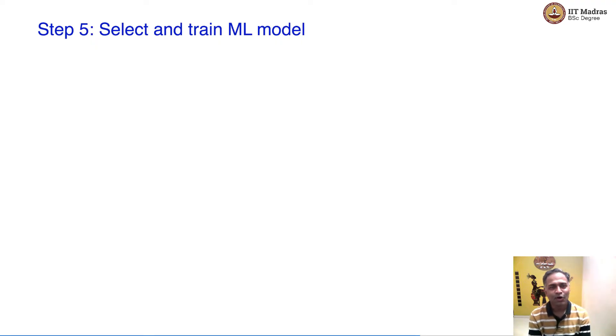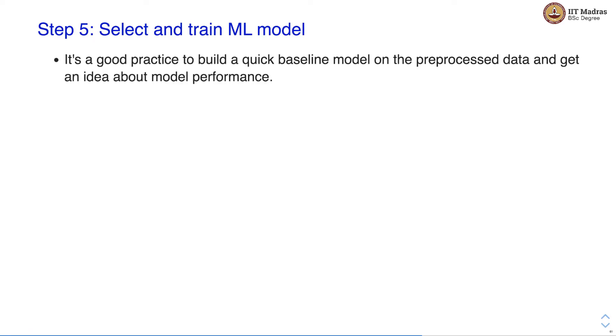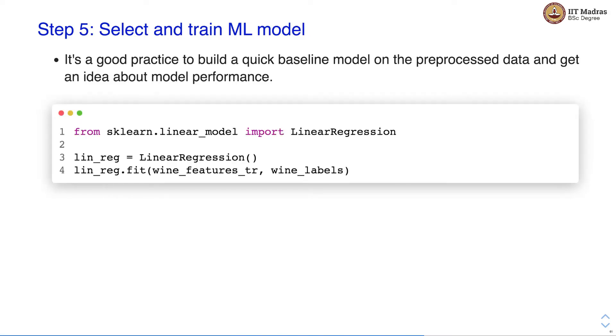Welcome to the next video of the machine learning practice course. In this video we'll talk about how to select and train a machine learning model — this is step number five in our end-to-end machine learning project. When solving a machine learning problem and getting the data, we are often not sure what kind of model to use. In this case, it's a good practice to build a quick baseline model on the pre-processed data and get an idea about model performance.